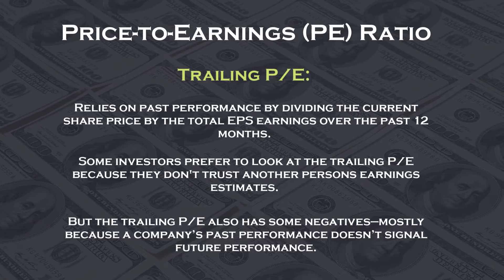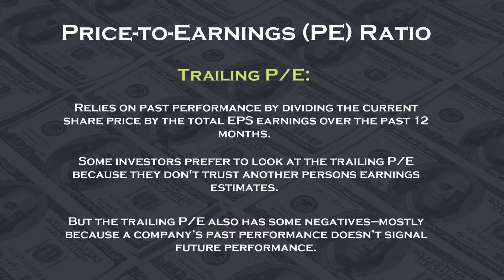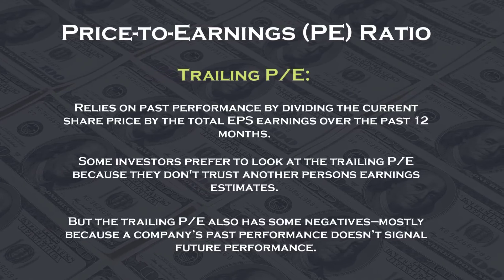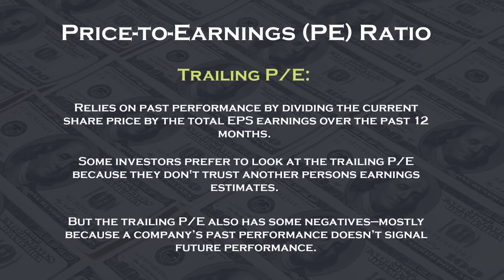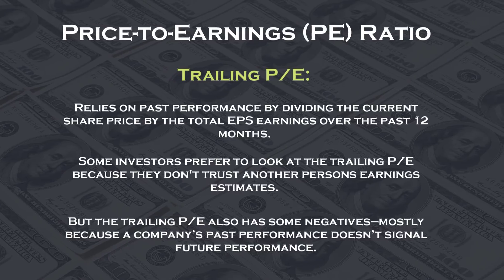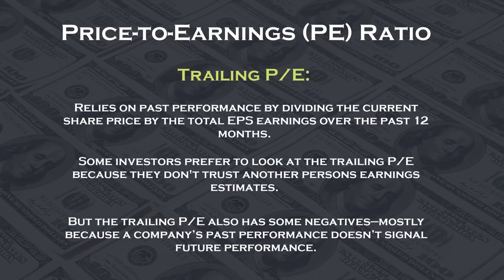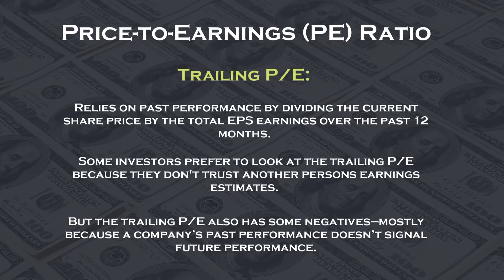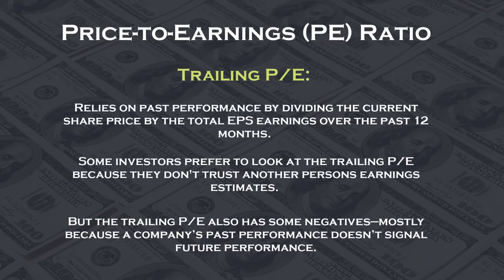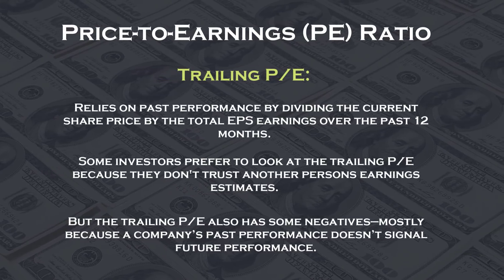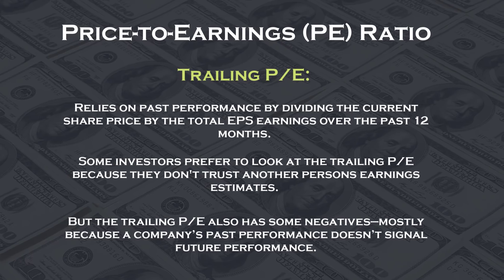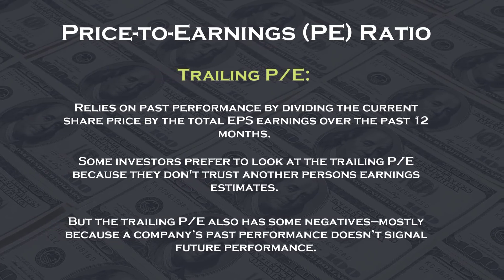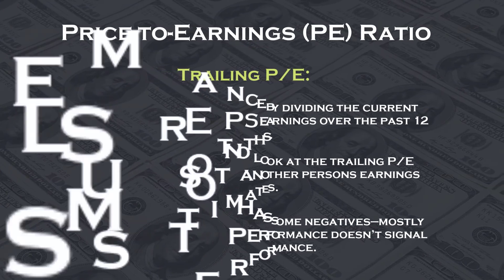The trailing PE ratio will change as the price of the company's stock moves, because earnings are only released each quarter while stocks trade day in, day out. As a result, some investors prefer the forward PE. If the forward PE ratio is lower than the trailing PE ratio, it means analysts are expecting earnings to increase. If the forward PE is higher than the current PE ratio, analysts expect them to decrease.